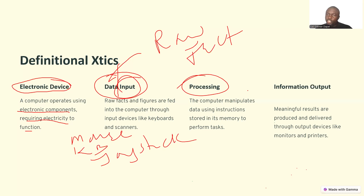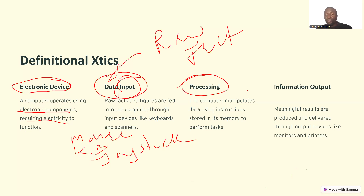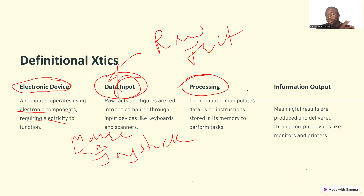When I turn the cassava into garri, the act of changing the cassava into garri is called processing. So I am processing cassava into garri — changing its form. In the same way, the act of manipulating raw data is called processing.